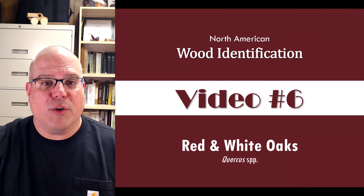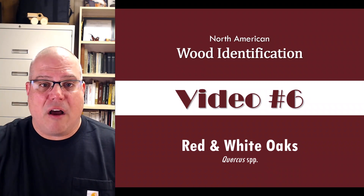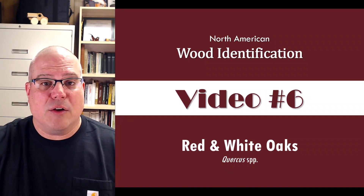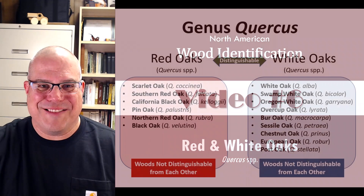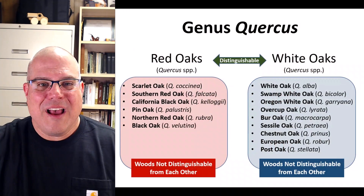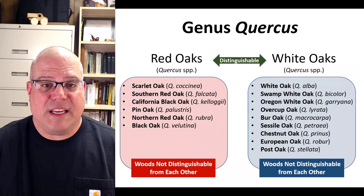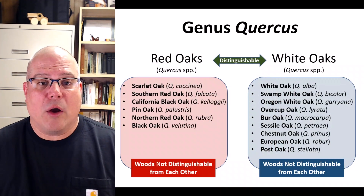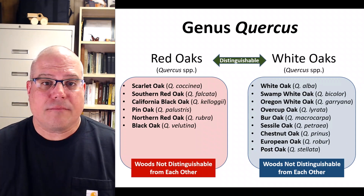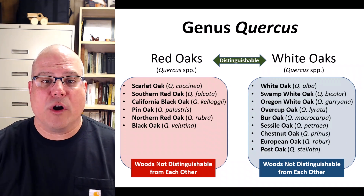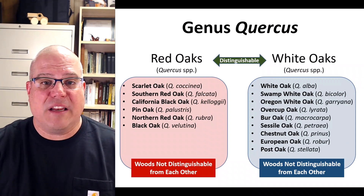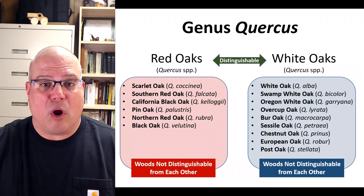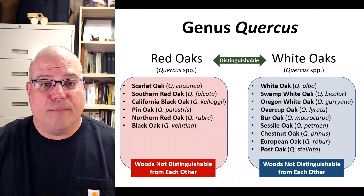Red oak and white oak are two of the most popular hardwoods in North America. Heavy and hard, they are widely used for furniture, flooring, and cabinet applications. While commonly understood to be species, red oak and white oak are actually species groups. The genus Quercus contains many different species of oak, which you can broadly divide into the red oak group and the white oak group.